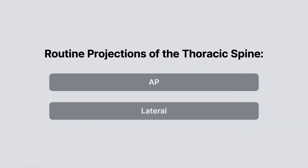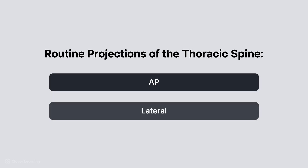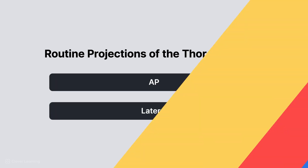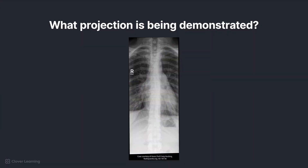As a reminder, the routine radiographic projections of the thoracic spine are AP and lateral. Take a look at this radiograph. What projection is being demonstrated? How do you know? Let's find out the answers to these questions.